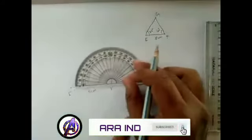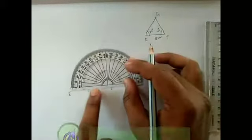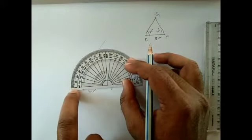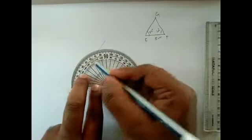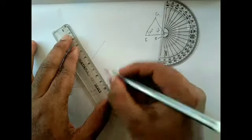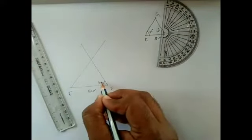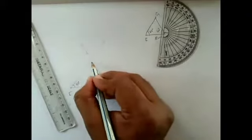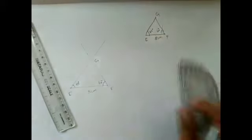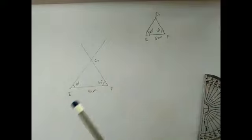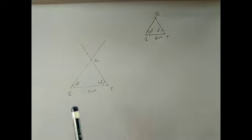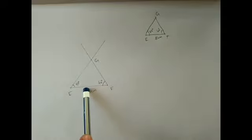Again we keep the protractor at vertex F to construct an angle of 60 degrees. Now the arm is coinciding with the outer zero, so we check the outer angle — 10, 20, 30, 40, 50, 60 degrees. Now we join the two points. The two angle lines — 60 degrees and 50 degrees — are intersecting at one point, and that is our vertex G. If the lines are not intersecting, we can extend them as needed. This is how we construct a triangle when two angles and the included side is given.